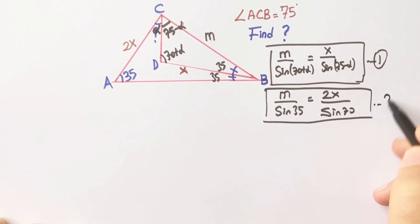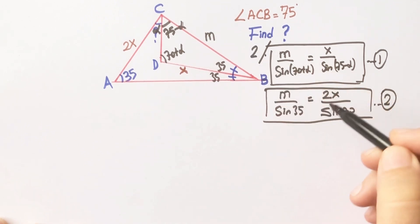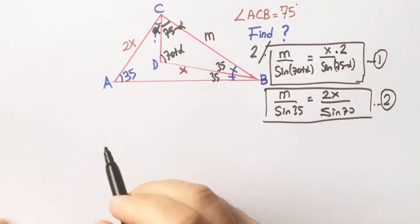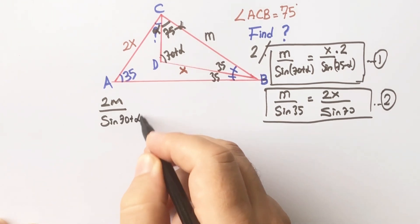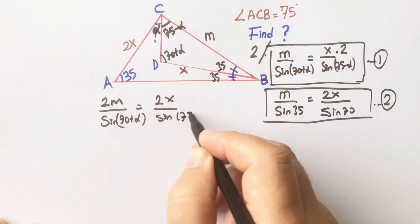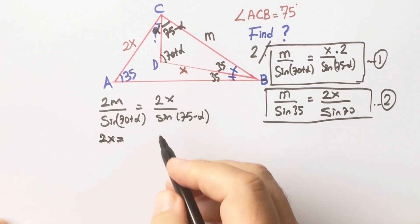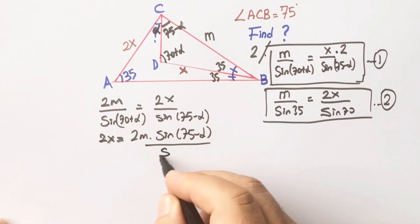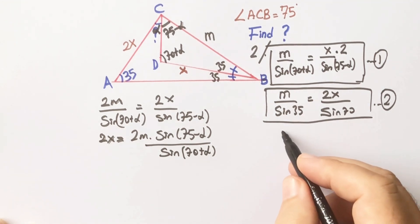If you notice that if we multiply the first expression by two, you will get 2X. So: 2M over sine(70 + alpha) equals X over sine(75 - alpha), which gives us 2X equals 2M·sine(75 - alpha) over sine(70 + alpha).